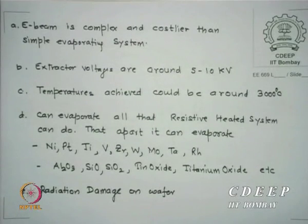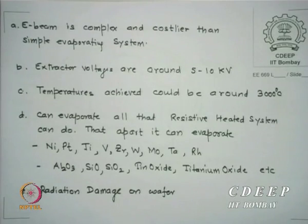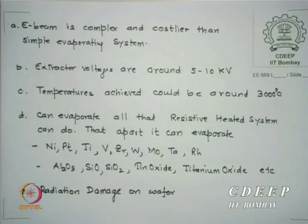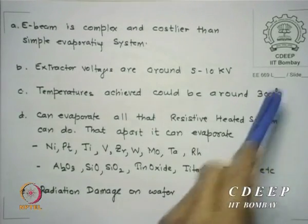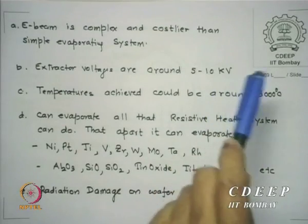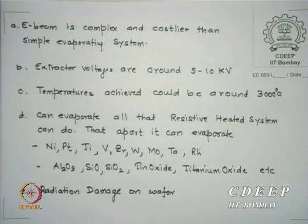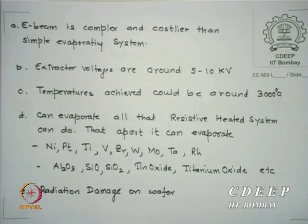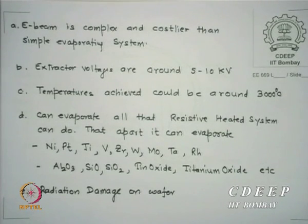The advantage is that since it can go to higher temperatures, it can evaporate all resistive-heated system materials and additionally nickel, platinum, titanium, vanadium, zirconium, tungsten (if it goes to 3000°C), tantalum, rhodium, iridium, and more. It can also evaporate alumina, SiO, SiO₂, tin oxide, titanium oxide, and many such oxides.